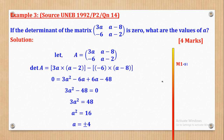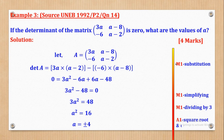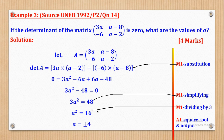Marks awarded: M1 for substitution into the determinant formula, M1 for simplifying, M1 for dividing by 3 to get A squared = 16, and A1 for taking the square root to get A = ±4.